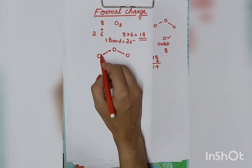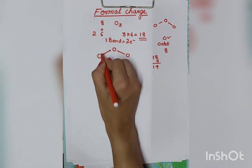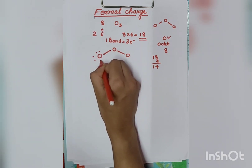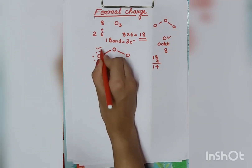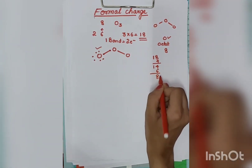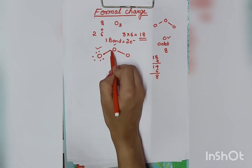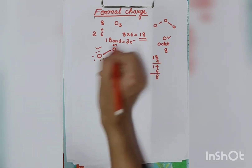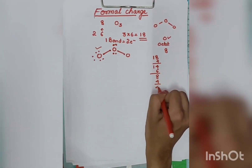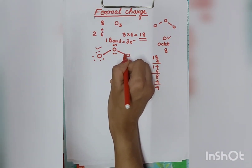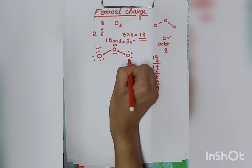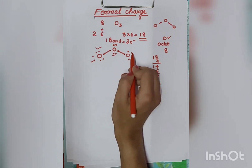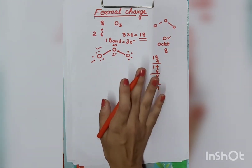We have 14 electrons remaining. We distribute them to complete the octets on each atom. We give 6 electrons to one terminal oxygen to complete its octet. Then we give electrons to the other terminal oxygen. Counting: 1, 2, 3, 4 — we give it 4 more electrons to reach 8. After distributing, our electrons are finished. Two atoms have complete octets, but the middle one does not — it only has 6 electrons, so we cannot complete the octet with single bonds alone.